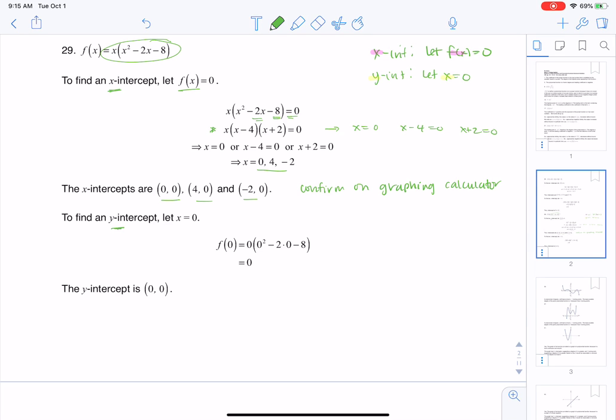Now, to find the y-intercept, I'm going to let x equal 0, and that's a matter of just plugging 0 into the function. So you see me substitute in 0 for x, I get 0 back out, and there's my y-intercept.